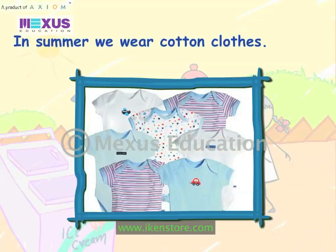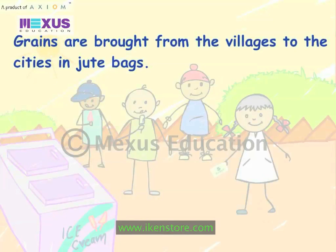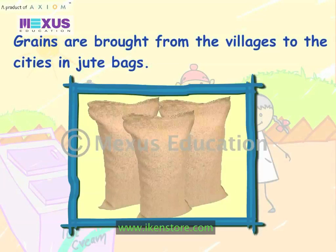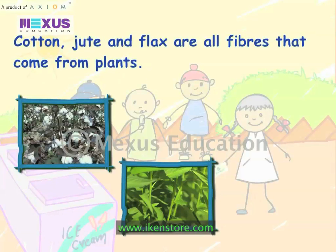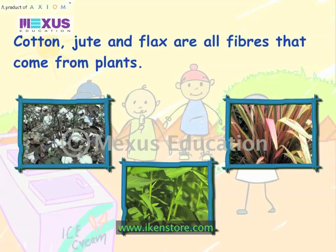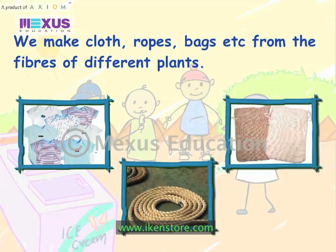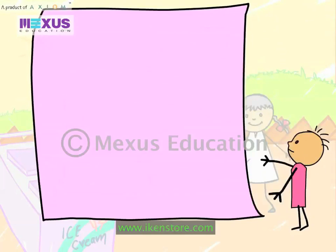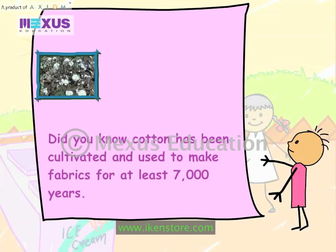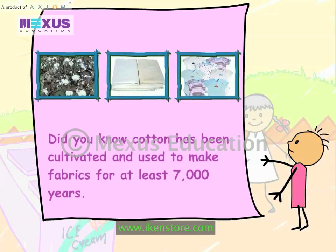In summer, we wear cotton clothes. Grains are brought from the villages to the cities in jute bags. Cotton, jute and flax are all fibres that come from plants. We make cloth, ropes, bags etc. from the fibres of different plants. Did you know cotton has been cultivated and used to make fabrics for at least 7000 years?